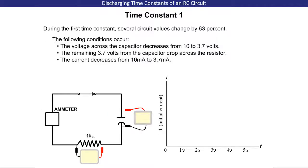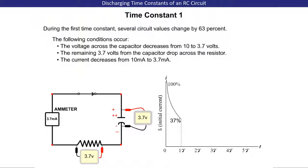Time Constant One. During the first time constant, several circuit values change by 63%. The following conditions occur. The voltage across the capacitor decreases from 10 to 3.7 volts. The remaining 3.7 volts from the capacitor drop across the resistor. The current decreases from 10 milliamps to 3.7 milliamps.